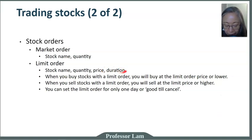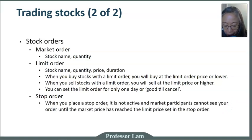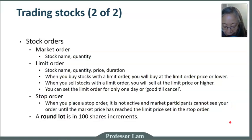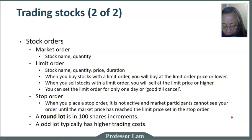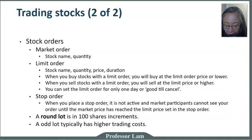For the duration, you can set the order for only one day or good till cancel. Another type of order is a stop order. A stop order is not active unless the price goes below a limit set in the stop order — it is a type of trading strategy. Finally, a round lot is 100 shares of stock. If you don't buy a round lot, your transaction is considered an odd lot and the commission for an odd lot is considerably higher.